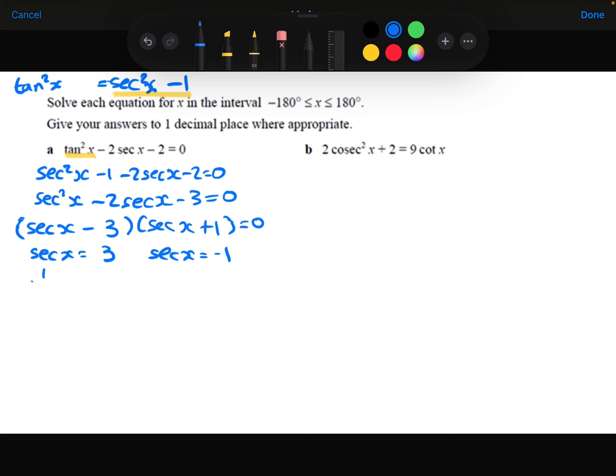Now let's just remember that sec is the same thing as 1 over cos. So if we do the reciprocals of each of those, the reciprocal of 3 is 1 third. The reciprocal of minus 1 is minus 1.